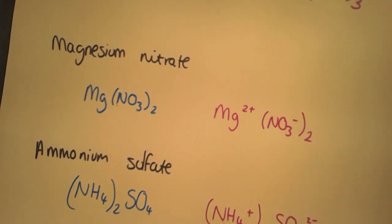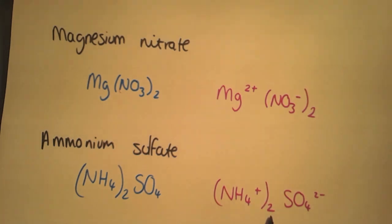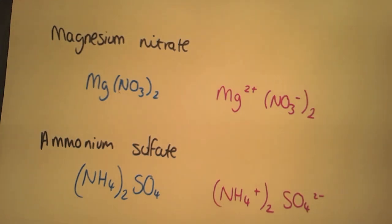So if you look at the last example there, you can see that the charges balance, and they will do for all examples. You have NH4, you've got two of them (2+), SO4 (2-). They balance to give you a neutral compound. That's your final check to make sure you've written the correct ionic formulae.